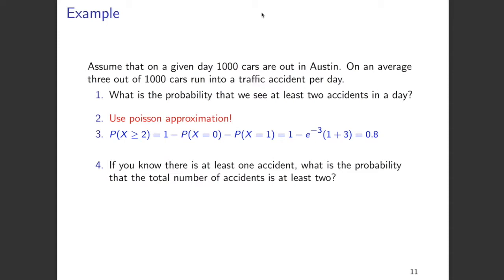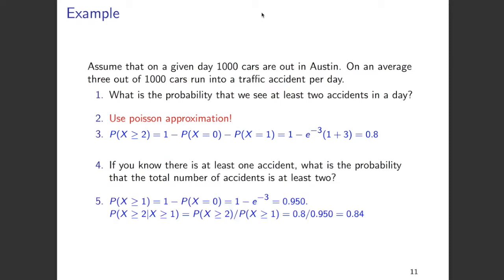The second question is: given that there is at least one accident, what is the probability that the total number of accidents is at least two? We first find that the probability of X greater than or equal to 1 equals 0.95. Then we compute the conditional probability of X greater than or equal to 2 given X greater than or equal to 1, which equals the probability of X greater than or equal to 2 divided by the probability of X greater than or equal to 1. Dividing 0.8 by 0.95 gives us approximately 0.84.